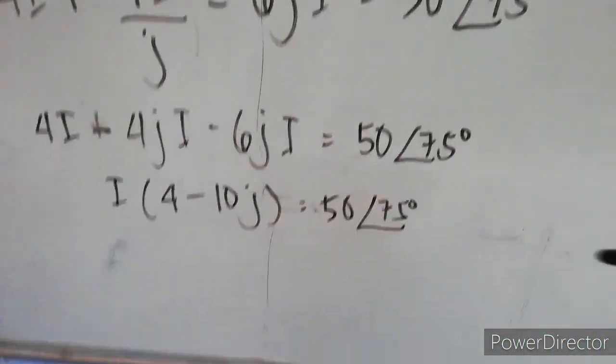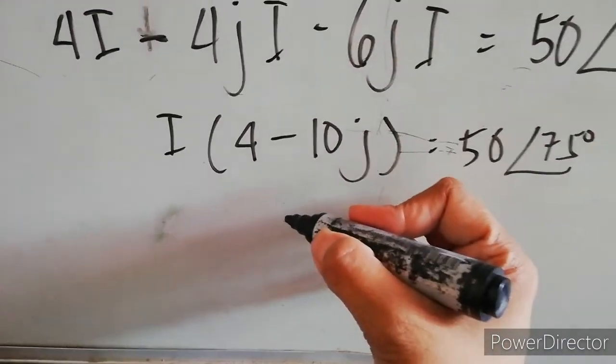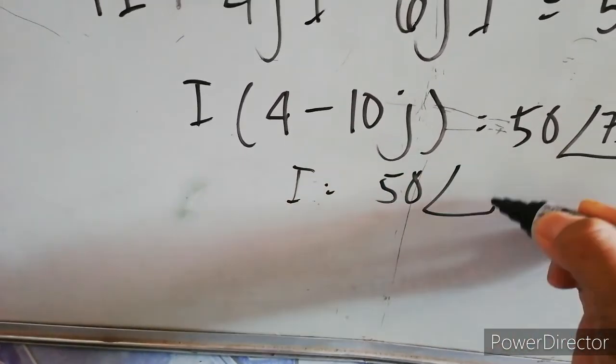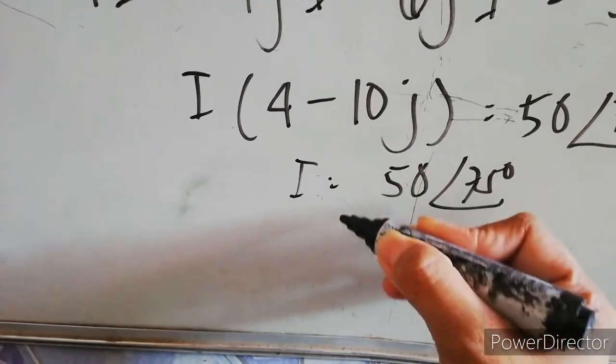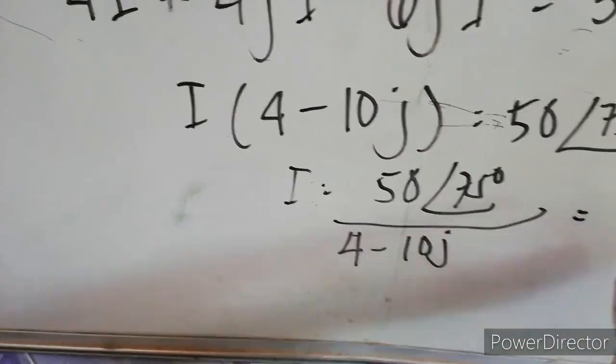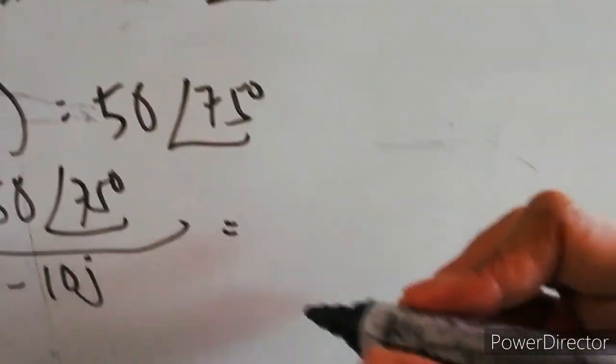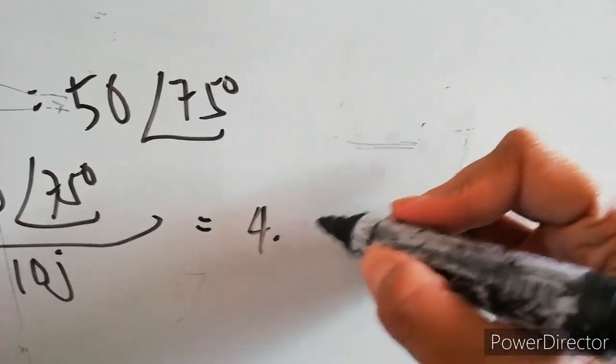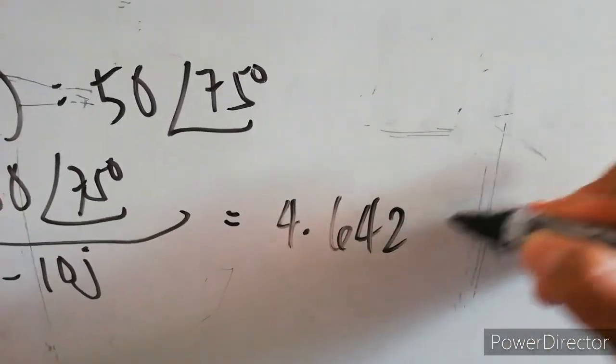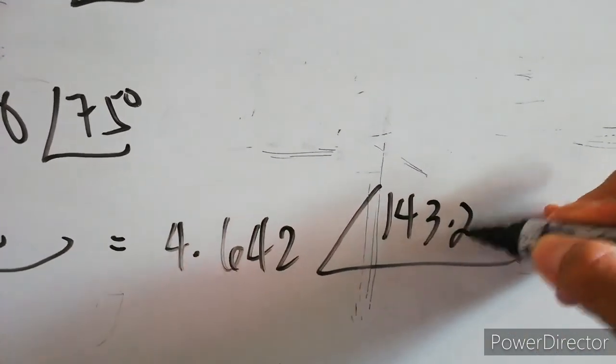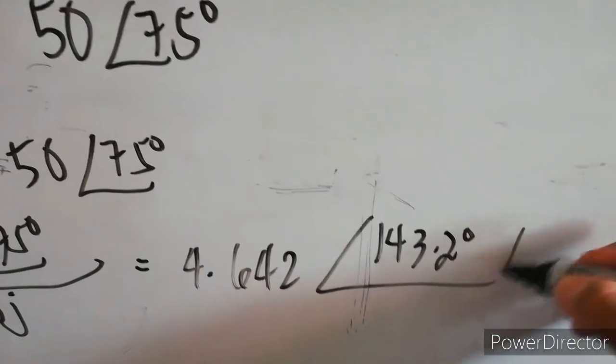Now, we can look for I. I is now equal to 50∠75° over (4 - 10j). You can just type it in your calculator complex mode, and you will get 4.642∠143.2° amperes.